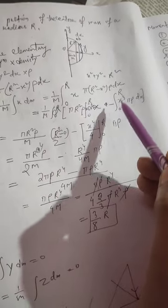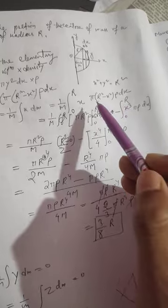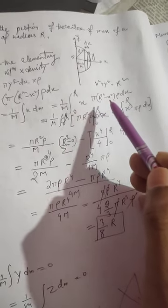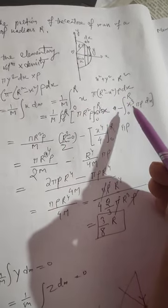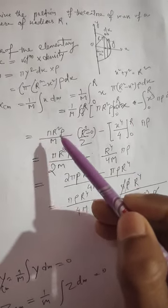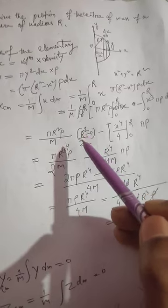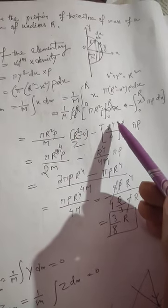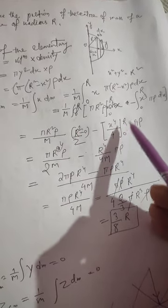This will be πx²ρdx, so x³πρdx. If you integrate this: πr²ρ/m times r²/2 minus x⁴/4 evaluated from 0 to r.